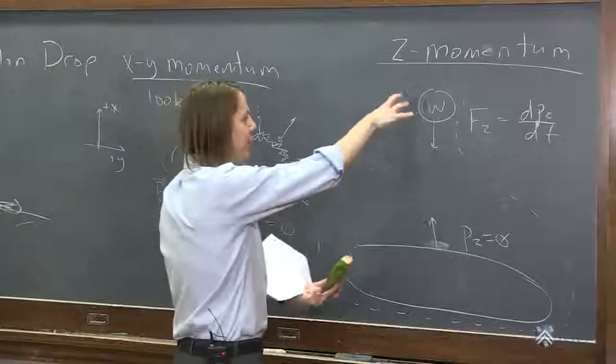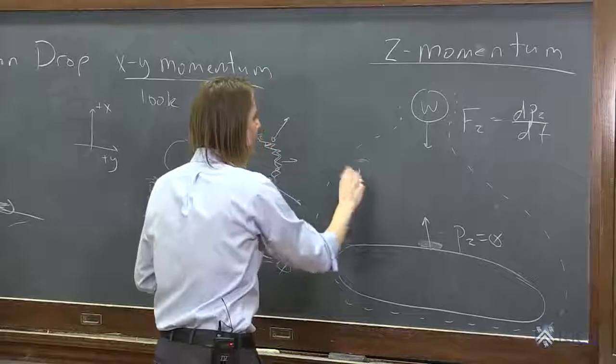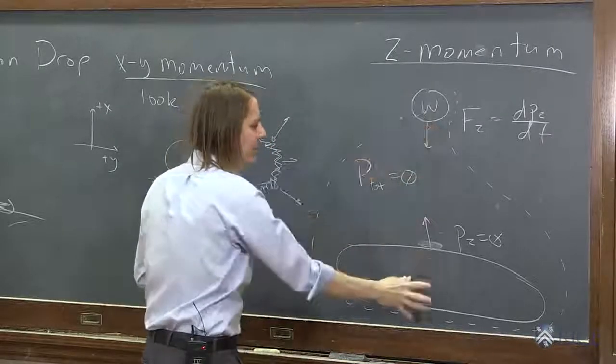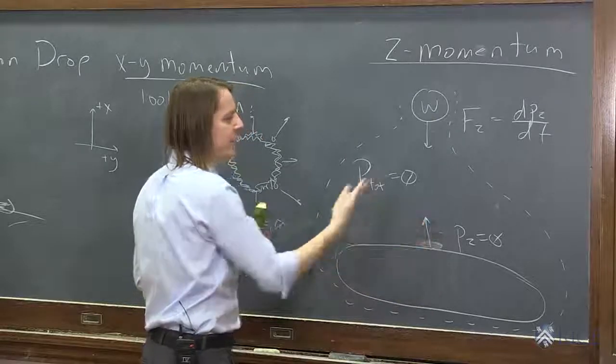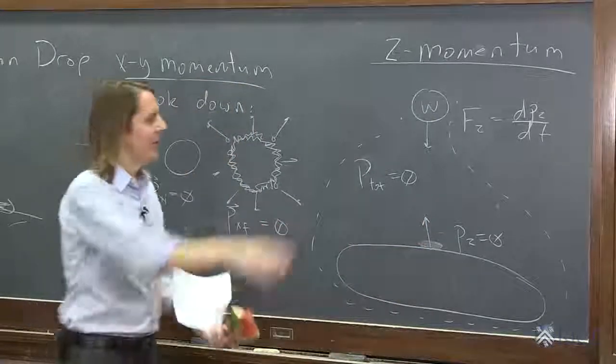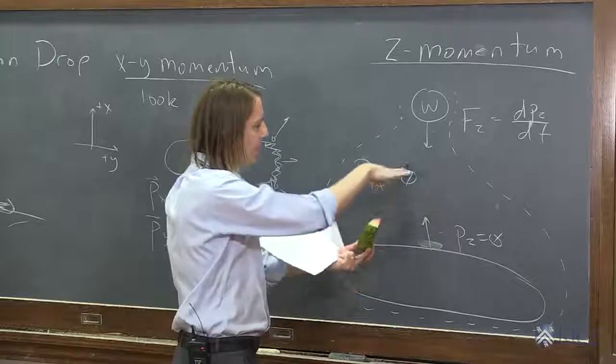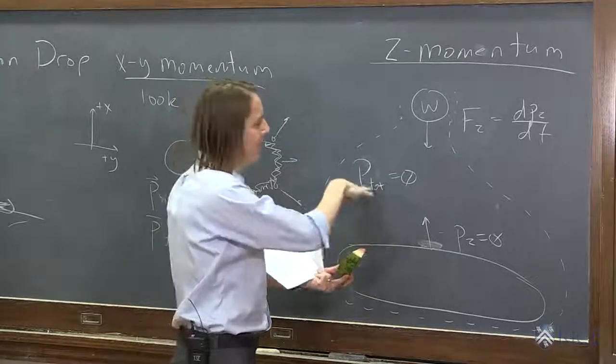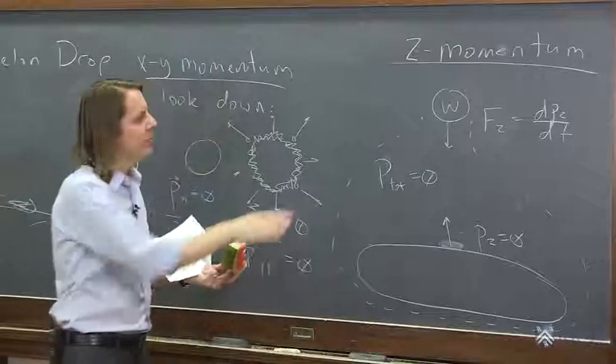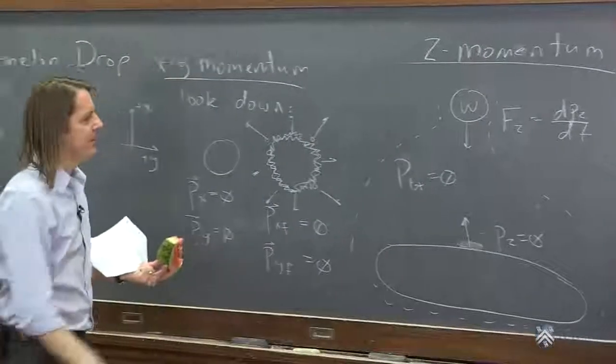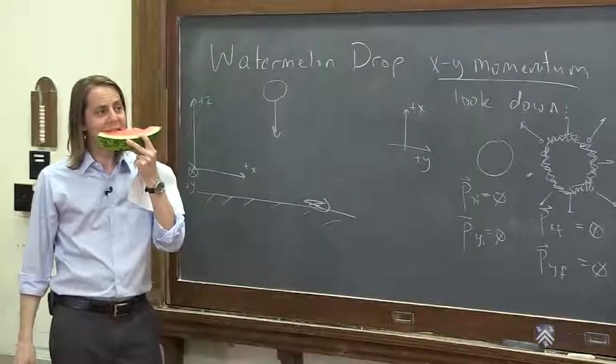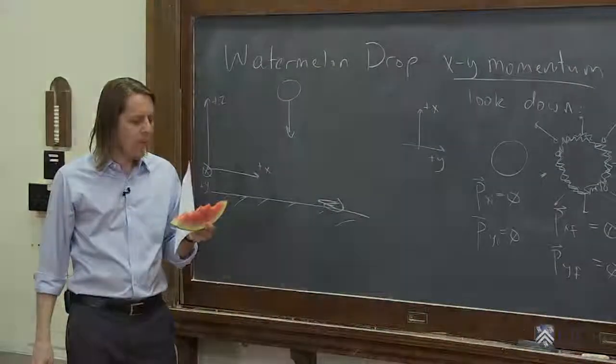So as they accelerate towards each other, the total momentum is zero. This has a momentum growing this way, this has a momentum growing this way, they add as vectors and the momentum is zero. And then they smash into each other, they both stop accelerating, their velocities go to zero, and the final momentum is also zero. So either way you think about it, you can justify this in x, y, and z in terms of momentum.